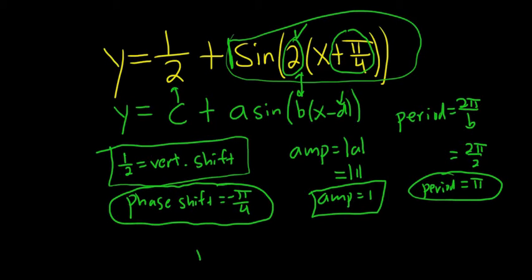And then lastly, let's find the range. To find the range, you have to think about it a little bit. The amplitude is 1, so that means ignoring the vertical shift, you'd be looking at a range of negative 1 to 1.